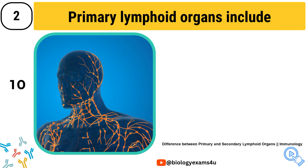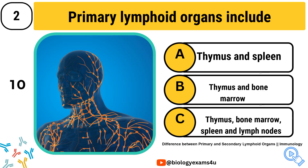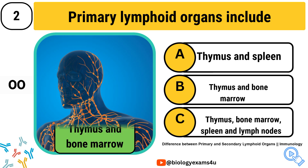Question number 2. Primary lymphoid organs include: Option A, thymus and spleen. Option B, thymus and bone marrow. Option C, thymus, bone marrow, spleen and lymph nodes. The correct answer is thymus and bone marrow.